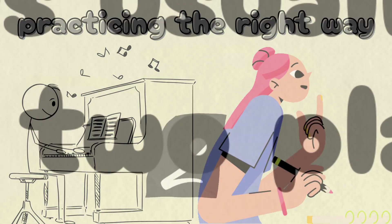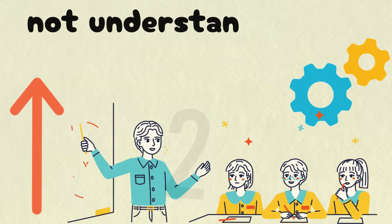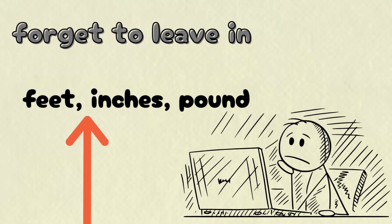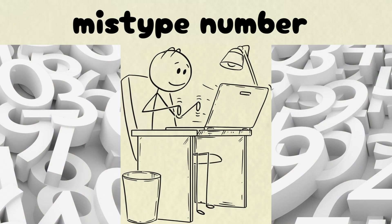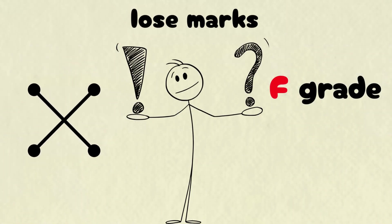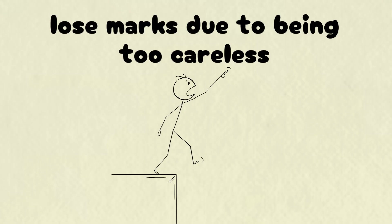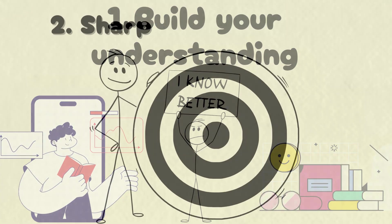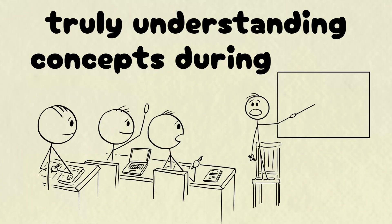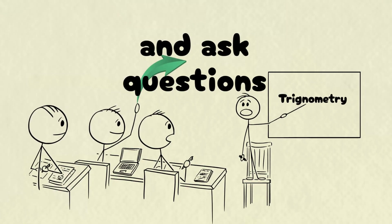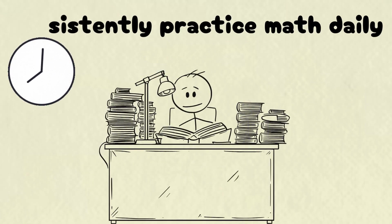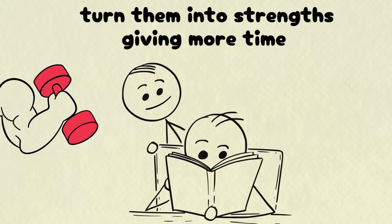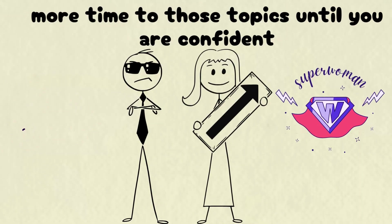In math, mistakes usually come from two places. Not understanding the concept, or being careless with what you already know, like forgetting to leave in the units, or maybe you mistype your numbers into the calculator, and here you're going to lose marks due to being too careless. To improve, you need to tackle both. Build your understanding and sharpen your accuracy. Focus on truly understanding concepts during class and ask questions. Then consistently practice math daily. Spread your study over time and target your weak areas to turn them into strengths, giving more time to those topics until you are confident.